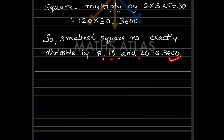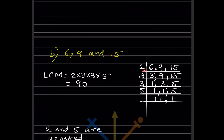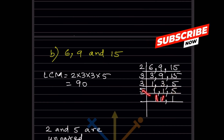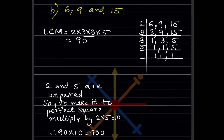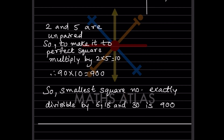For 6, 9, and 15: the LCM is 90. When we pair the prime factors of 90, only 3 is paired; 2 and 5 are unpaired. To make a perfect square, multiply by 2×5 = 10. So 90 × 10 = 900 is the smallest square number exactly divisible by 6, 9, and 15.